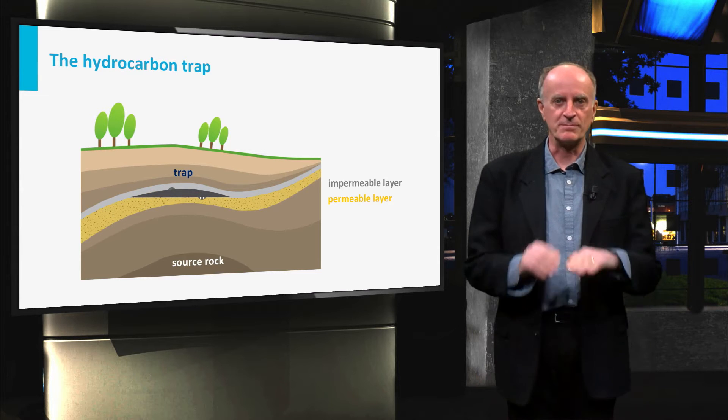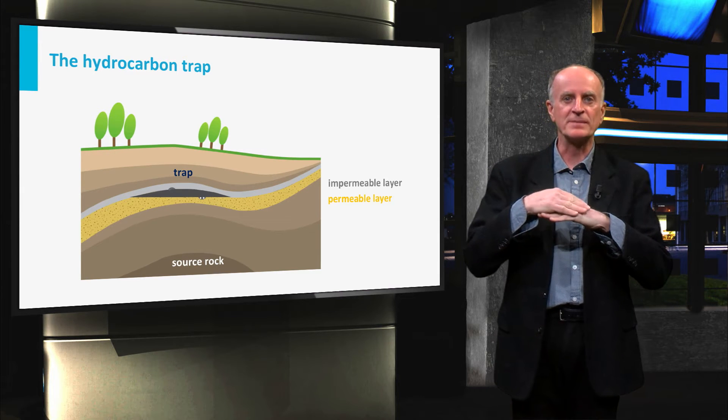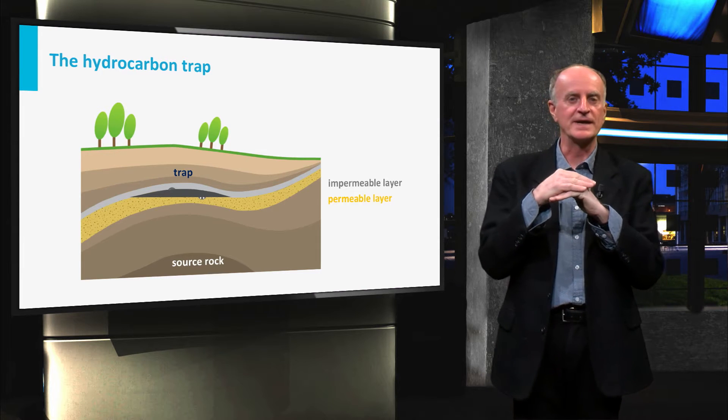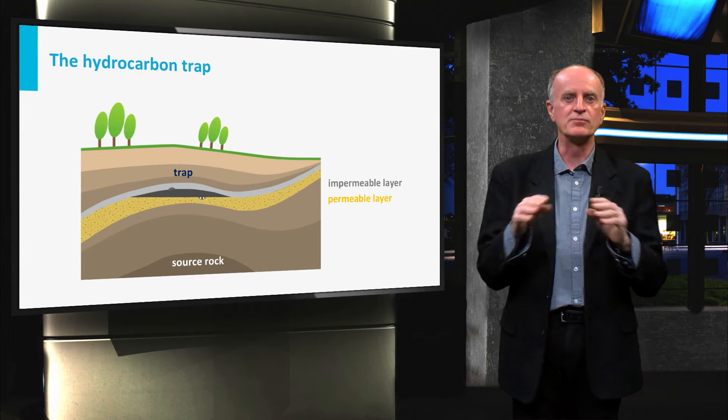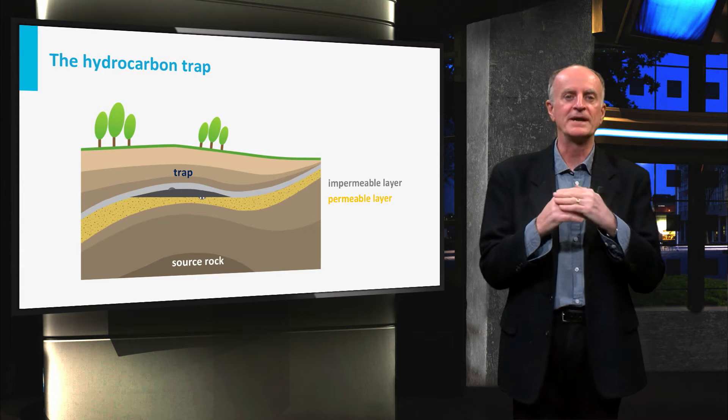A trap is composed of a permeable layer, the reservoir itself, covered by an impermeable layer of rocks, which is the seal. The two bodies are organized in such a way that the upward movement of hydrocarbons along the permeable layers is blocked by the impermeable layers.